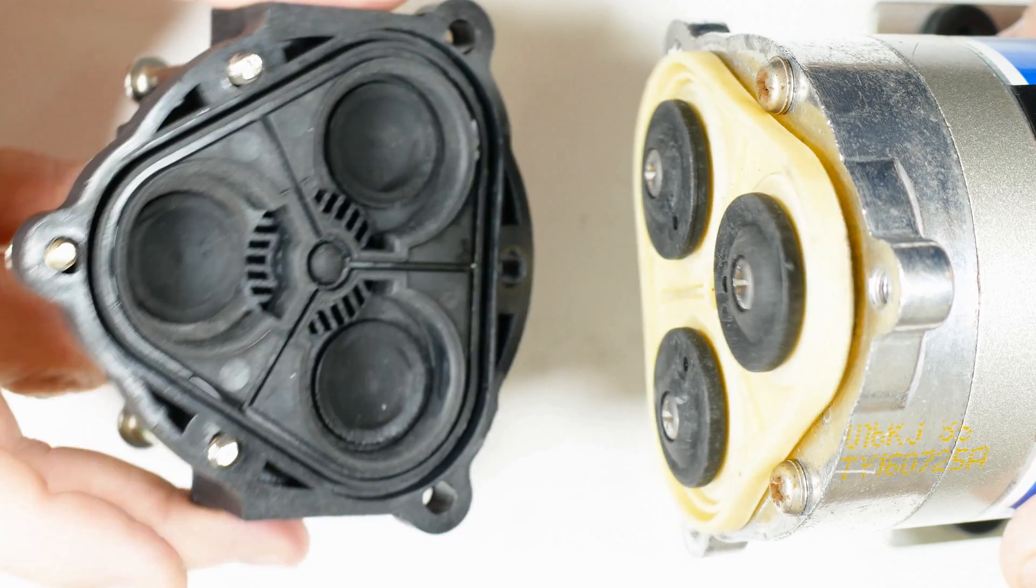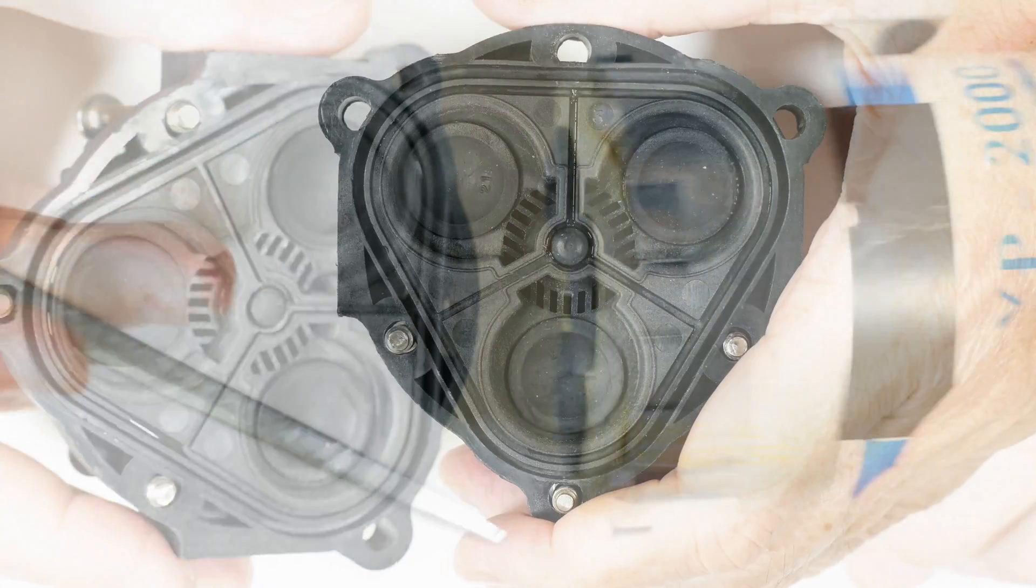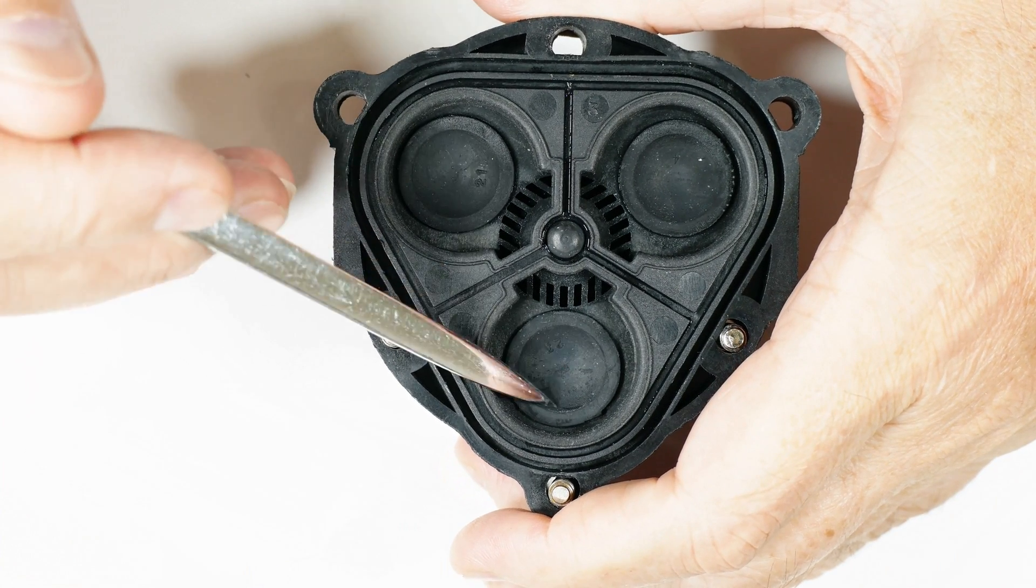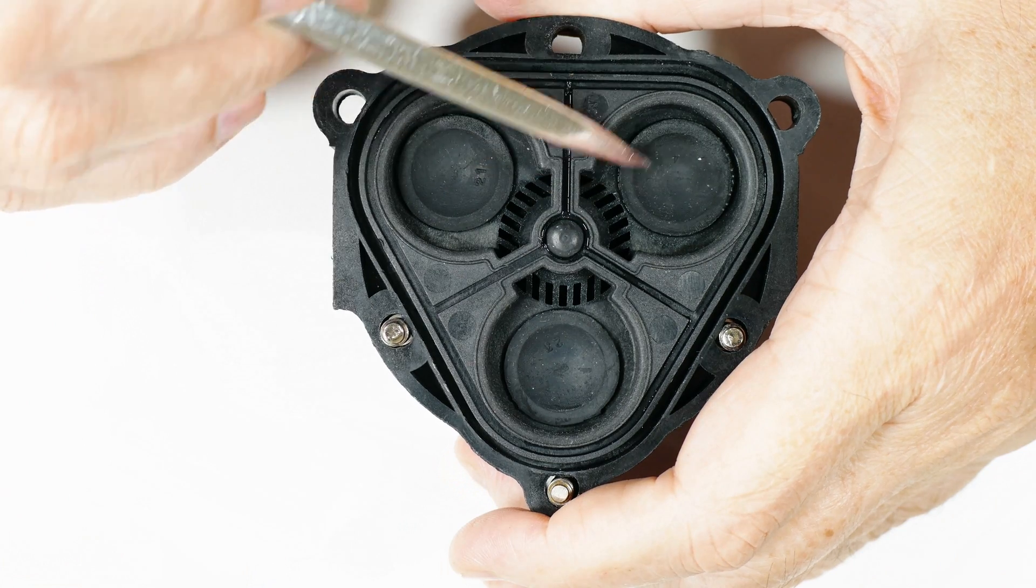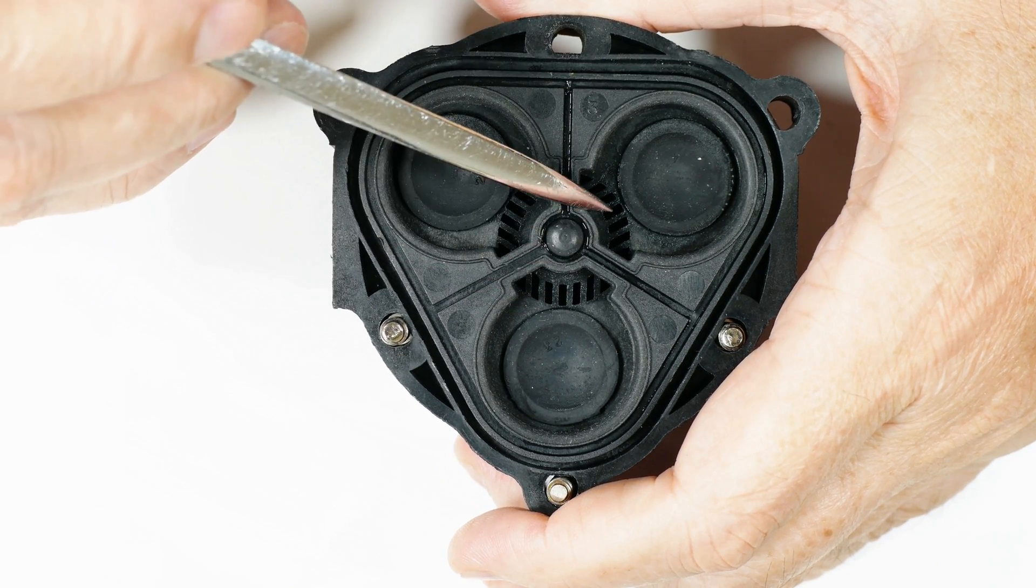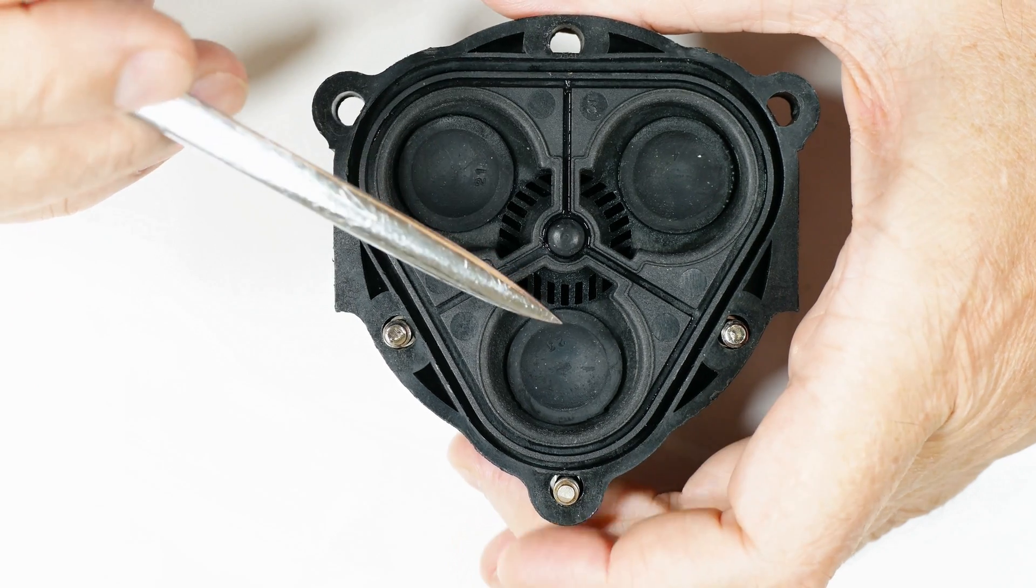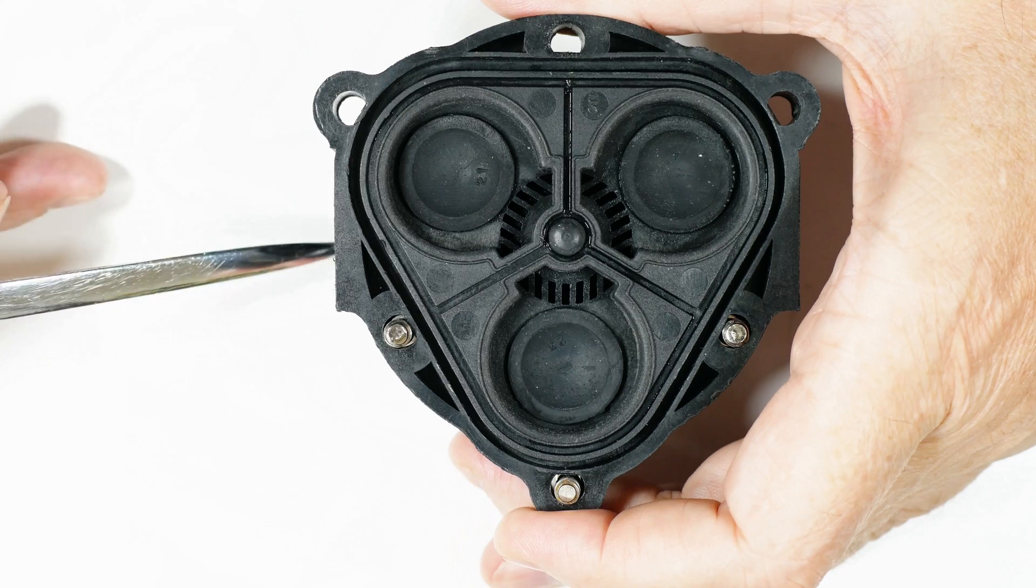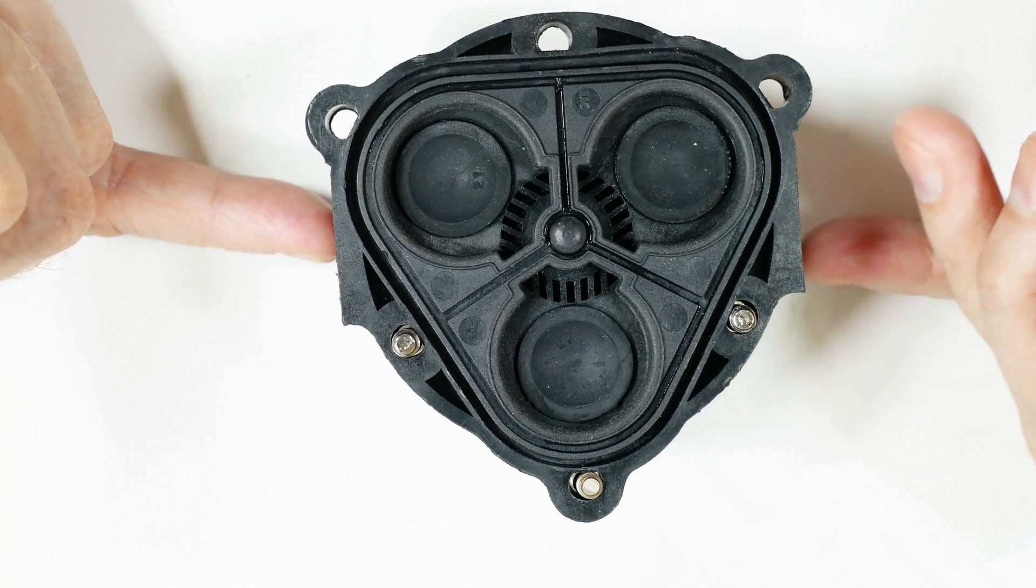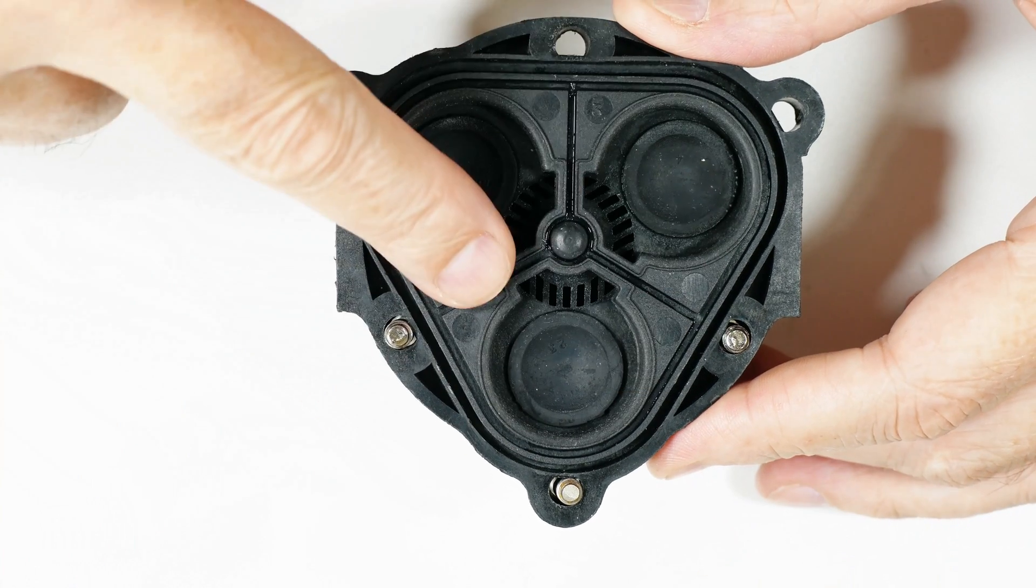Each of our three chambers has an intake - this is a rubber valve - intake, intake, and an exhaust right there, there, and there. The valve is on the other side. This is the inlet so the water goes in this side over here, comes out over here.